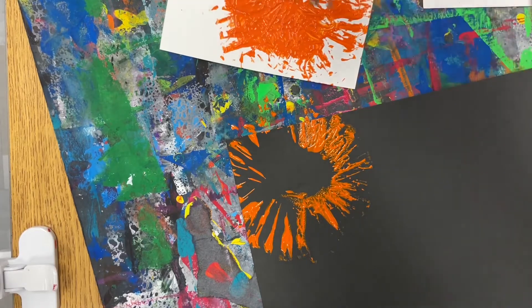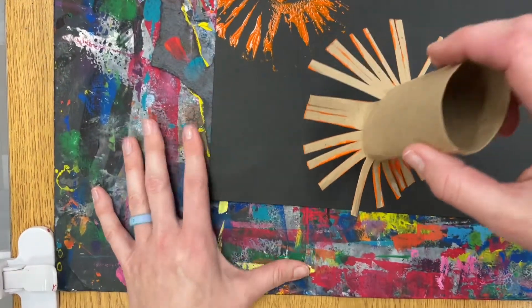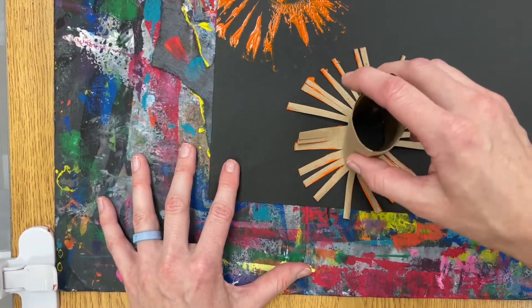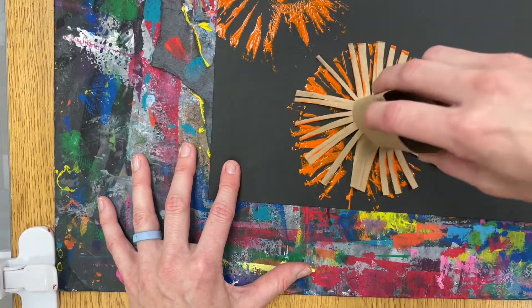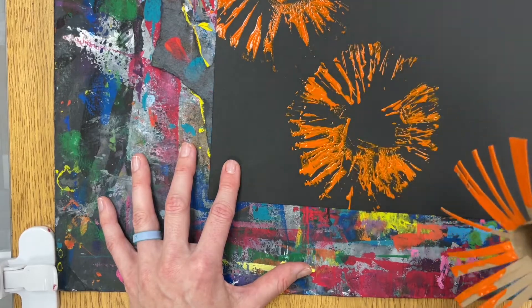Yet again, you're going to very gently pat around the paper towel roll and gently again stamp it on your paper and turn it kind of back and forth to keep the middle part of your flower black.